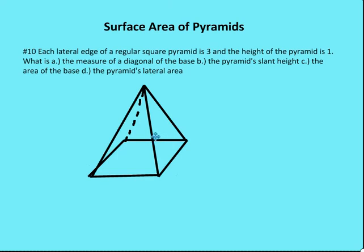So here we have a square pyramid. The lateral edge of the square pyramid is three, and the height of the pyramid is going to be one. I'm going to draw the height of the pyramid — the altitude is going to be one. They ask: what is the measure of a diagonal of the base of the pyramid?